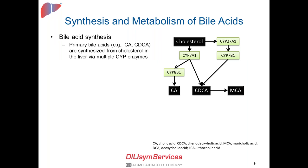Let's first talk about bile acid synthesis and metabolism. Cholesterol is the precursor of bile acid synthesis. In the liver, cholesterol undergoes multiple enzymatic steps to form cholic acid (CA) and chenodeoxycholic acid (CDCA). It's a multi-step process involving multiple cytochrome P450 enzymes. CYP7A1 is the major enzyme and the rate-limiting step for bile acid synthesis, involved in the classic pathway of formation of CA and CDCA.